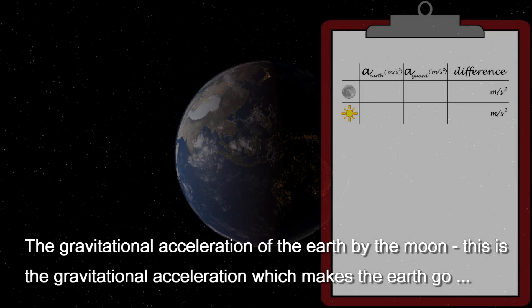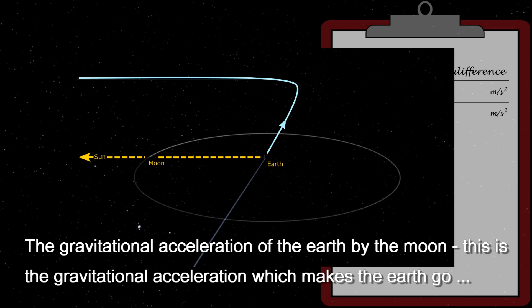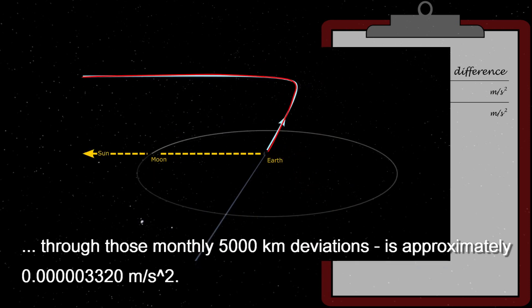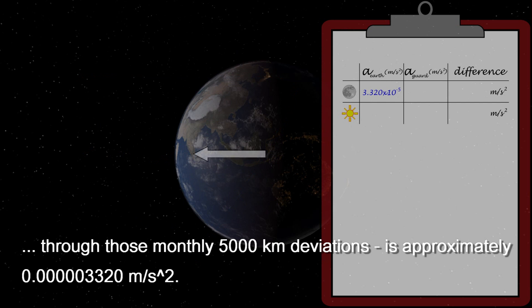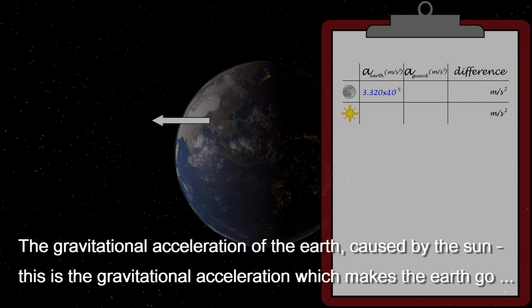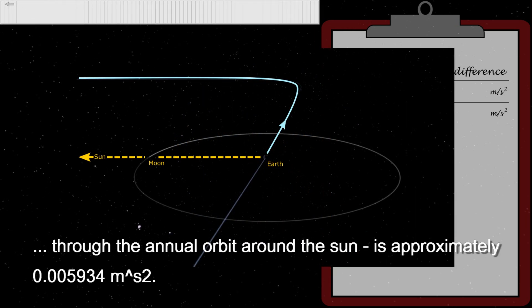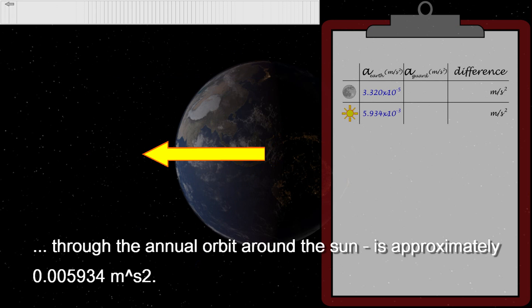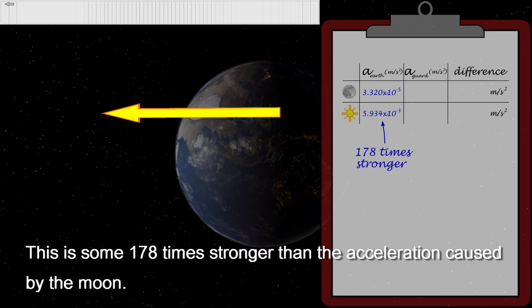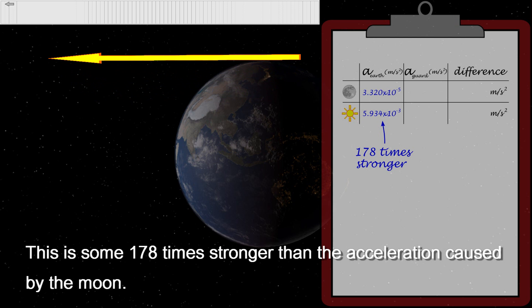The gravitational acceleration of the Earth caused by the Moon, this is the gravitational acceleration which makes the Earth go through those monthly 5000 kilometer deviations, is approximately 3.320×10^-5 meters per second squared. The gravitational acceleration of the Earth caused by the Sun, this is the acceleration which makes the Earth go through the annual orbit around the Sun, is approximately 5.935×10^-3 meters per second squared. This is some 178 times stronger than the acceleration caused by the Moon.